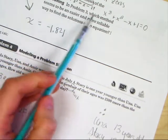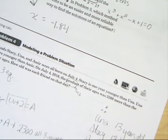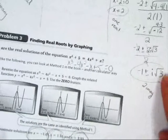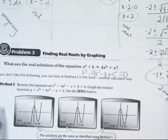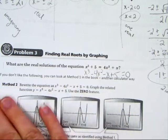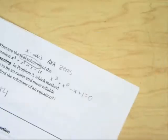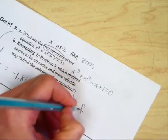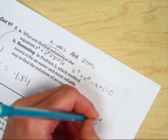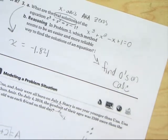Part B. In problem three, which method seems to be an easier and more reliable way to find the solutions of the equations. So they're asking us to go back to problem three. They gave us two methods. You can clearly say, or excuse me, you can clearly see that I didn't even like method one. So we're just going to say, this way is the easiest way. Okay? So when it says, which way is the easiest, just write, find zeros on calculator.